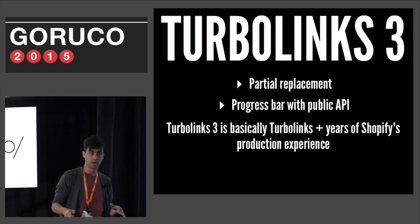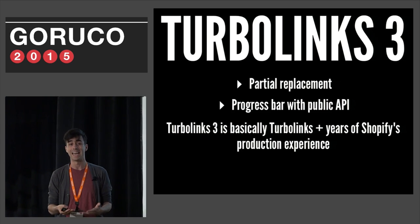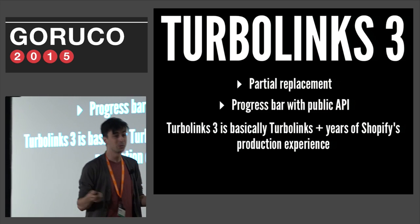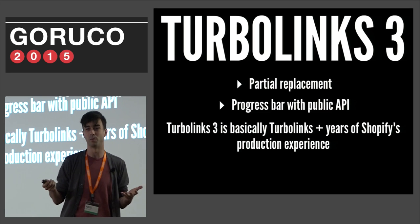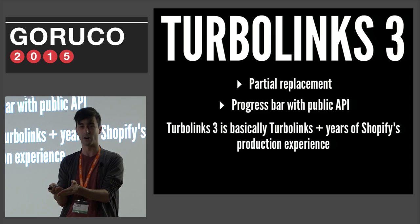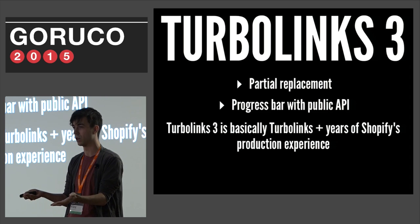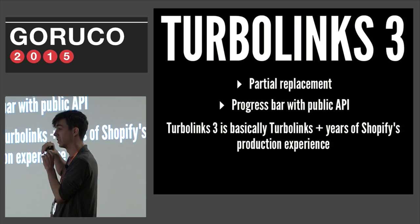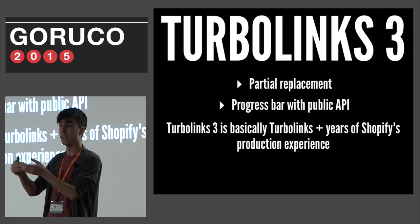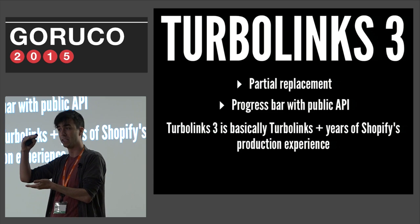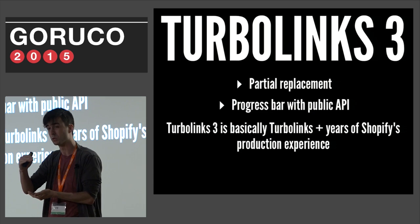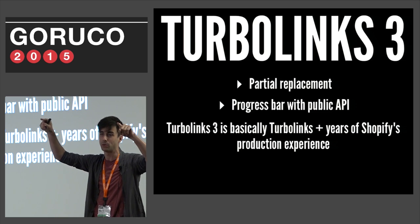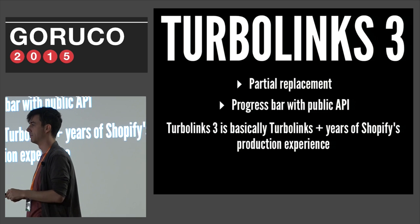Turbolinks 3 is coming with Rails 5, though you can use it today by pointing your gem source at GitHub. Mostly it's Shopify's incredible production experience being merged into Turbolinks core. We now have partial replacement, which replaces not the entire body but just parts of the page — or if there's a list of models, just the model instances that have changed. And there's now a progress bar at the top of the page with a public API for controlling it.